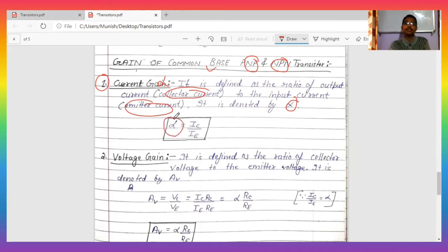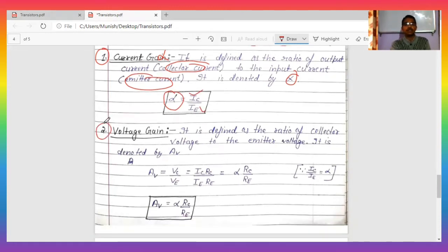Voltage gain is denoted by Av. Now you know the formula for voltage according to Ohm's law is IR. So basically we can write IR. This is collector current IC and collector voltage, so IC is collector current and RC is collector resistance.